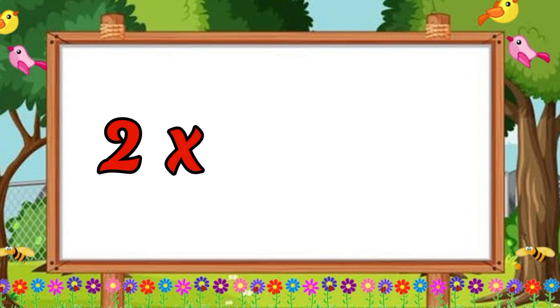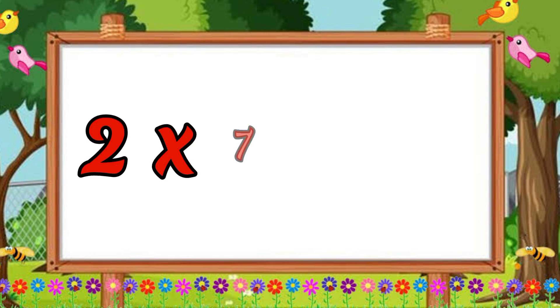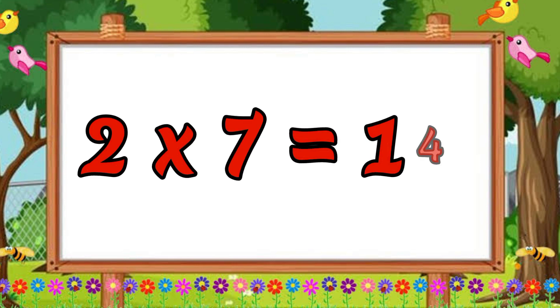Two sixes are twelve. Two sixes are twelve. Two sevens are fourteen. Two sevens are fourteen.